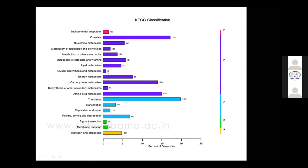Glycan biosynthesis — as shown before — is nothing but the carrageenan compound. Its biosynthesis and metabolism are very low, showing that bacteria are involved in producing carrageenan enzymes, which are responsible for degrading the carrageenan compound in the algae.